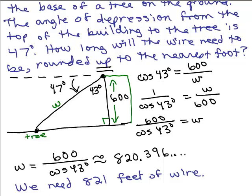We need 821 feet of wire. And by the picture that looks like, you know, maybe that's reasonable. If this is 600 and I drew this sort of correctly, the wire is going to be much longer than the height of the building. It has to be more than the height, obviously, right, because it's the hypotenuse.